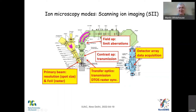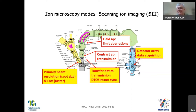This means we fully preserve the high mass resolution capability of the instrument for the entire analysis. In this mode, the contrast aperture no longer determines sharpness, and the field aperture is only used to limit aberrations. When we detect, we can use all of the detectors in our detection array. The software then unscrambles the Dynamic Transfer Optical System — it knows when the ions started and where they came from in the raster, and it puts them back into an ion image built up in the software. This is a very, very powerful mode.